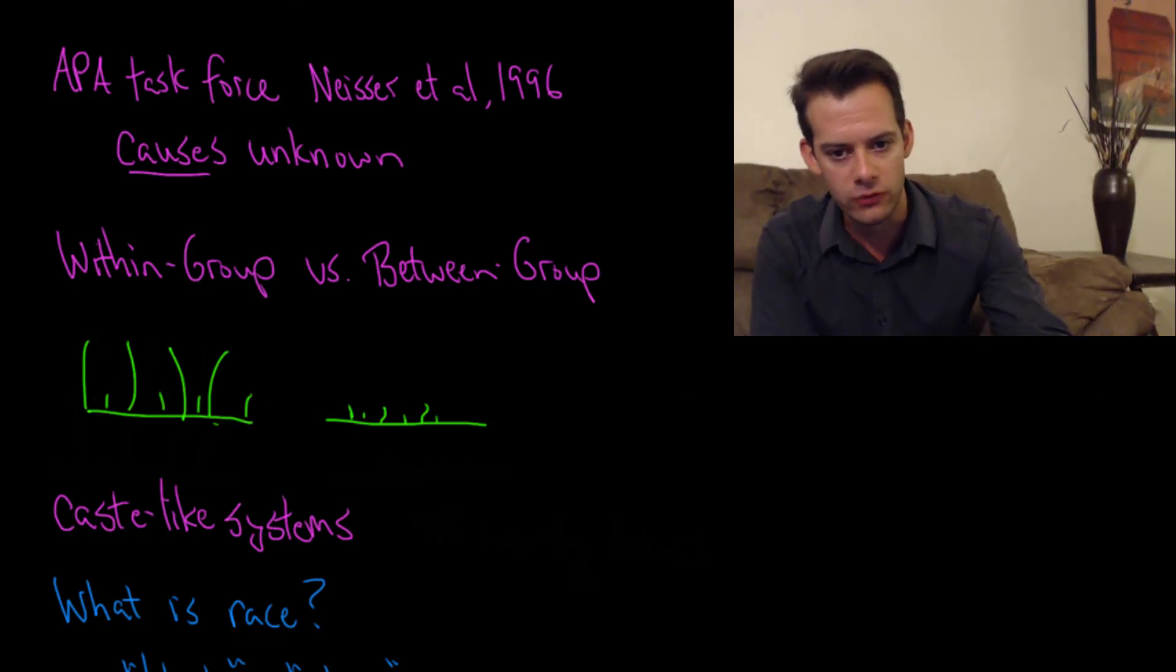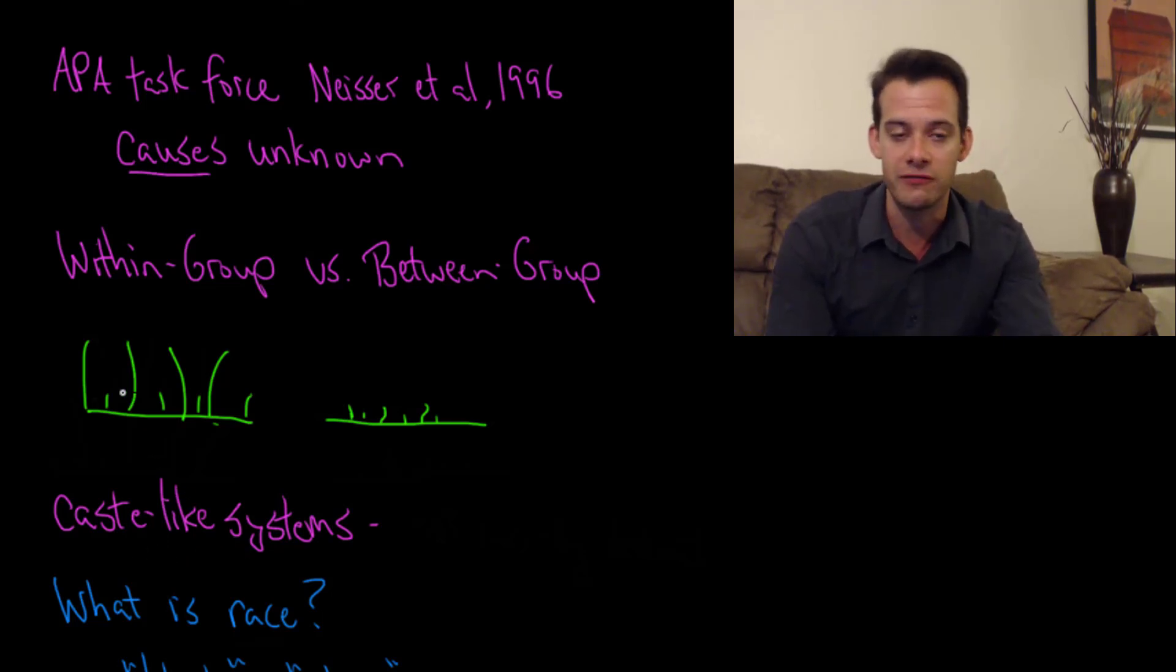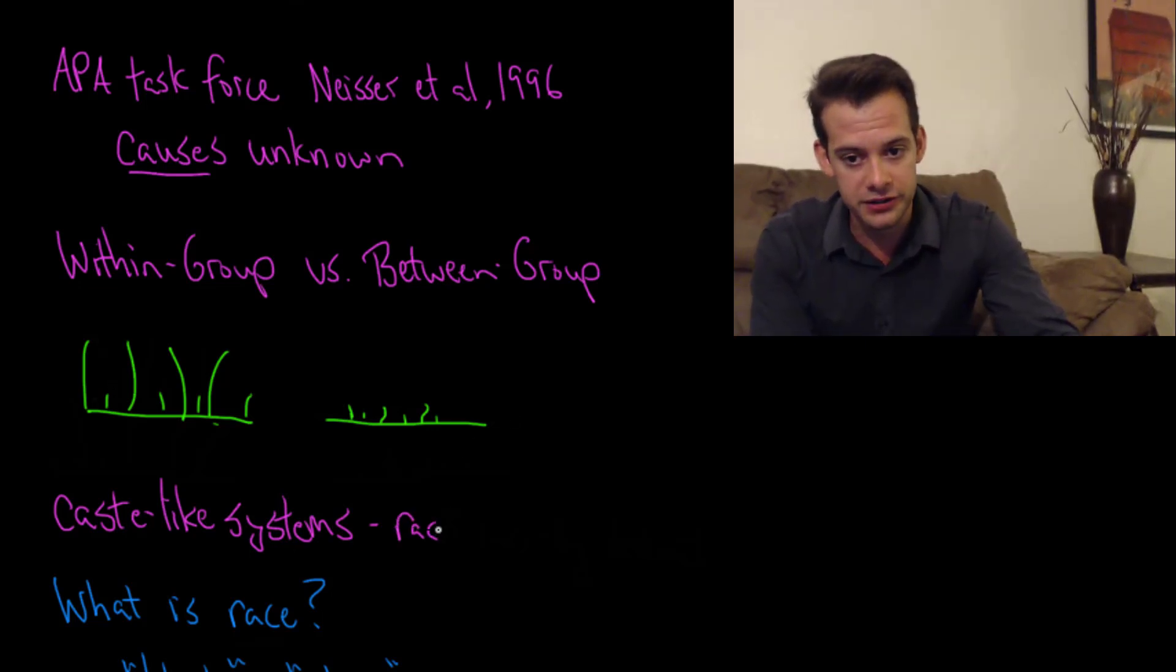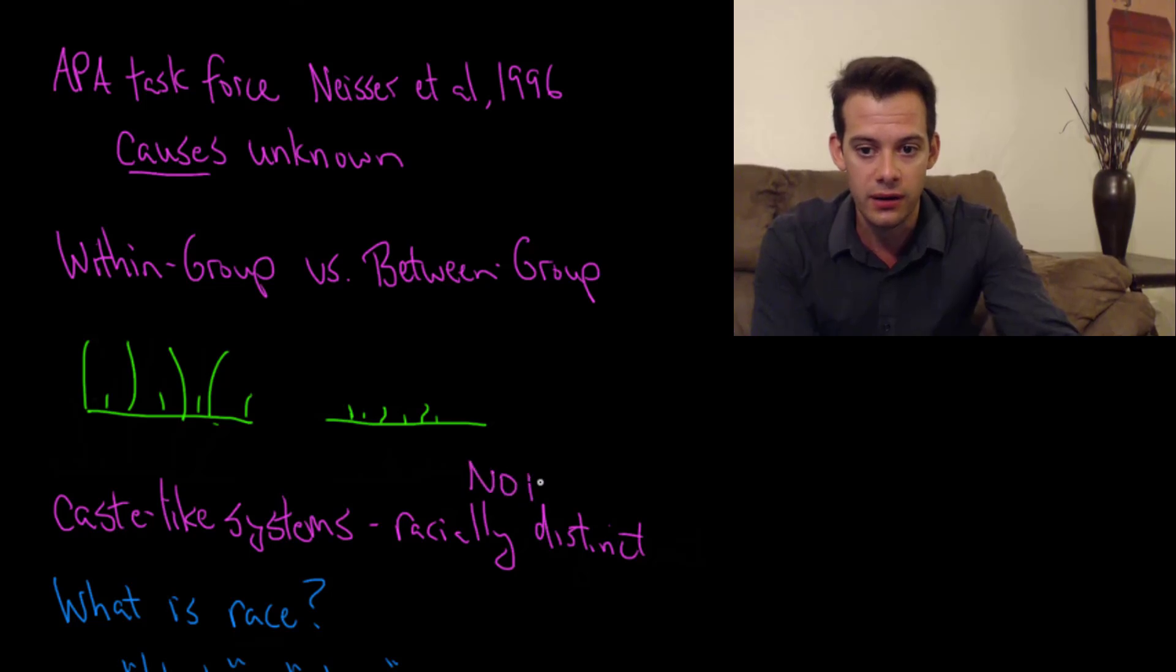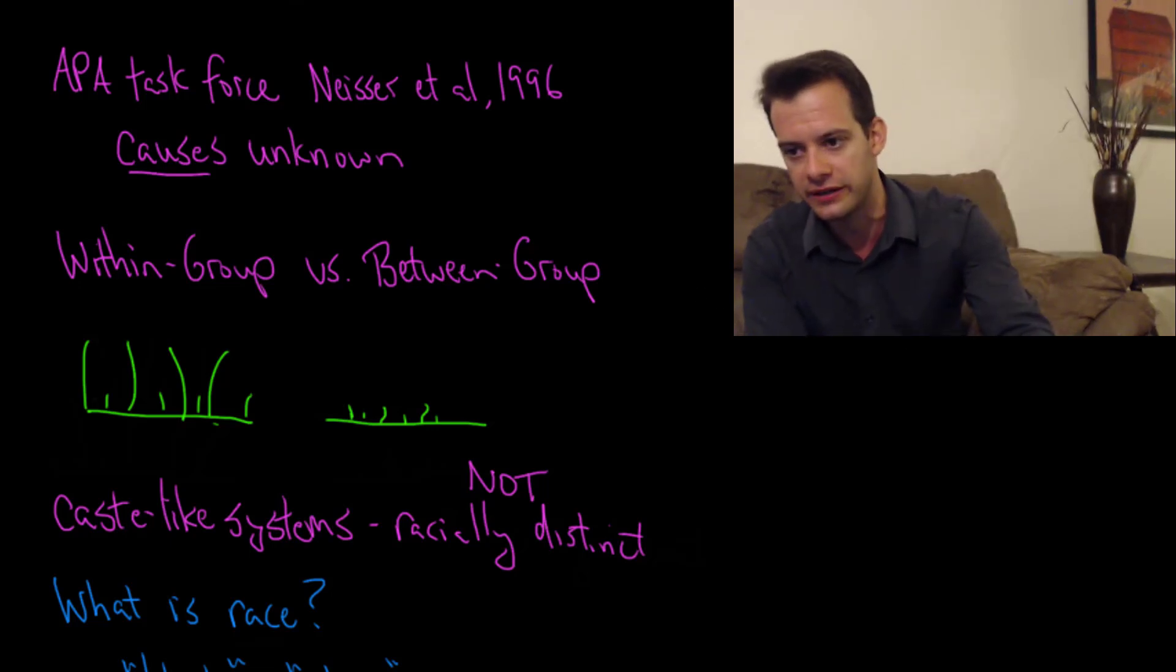Another point this paper made was if you look at caste-like systems in some societies, where there's a dominant group and a subordinate group within the culture, you often find differences in the average IQ of people from these two groups. This even occurs when these groups are not racially distinct. You could have a society with a caste-like system where people get different average IQ scores even though these two groups aren't considered to be different races. That would suggest it's not a genetic issue, it has nothing to do with race, but something to do with the societal structure.